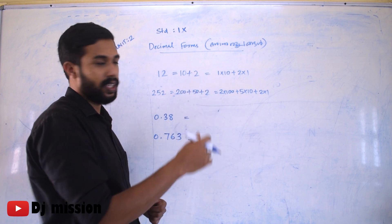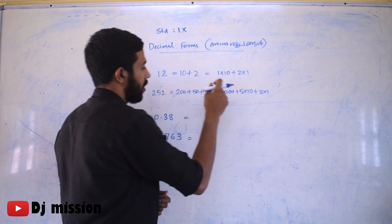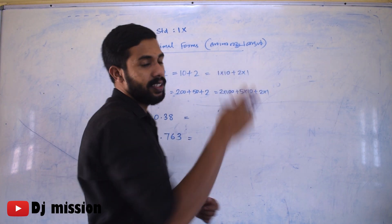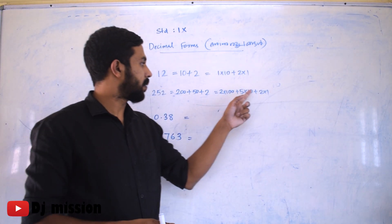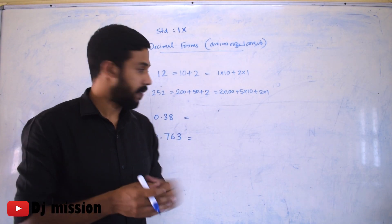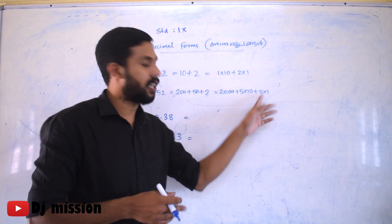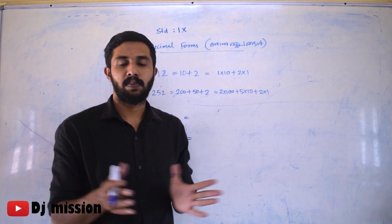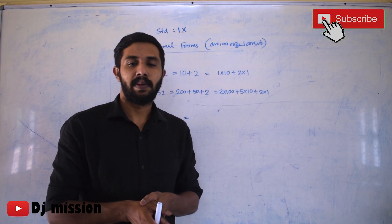Two hundredths, five tenths, and two ones. One hundred, five tenths, and one hundred — this is how it is. Now: one hundredths, one hundredths, ten place, one place — place value, this is how it is.